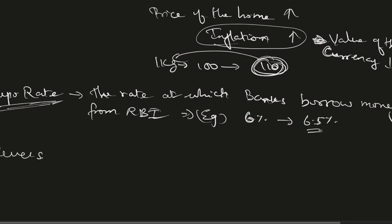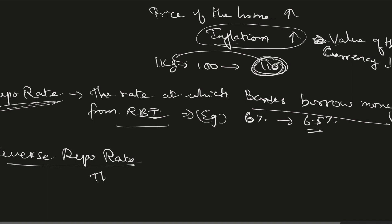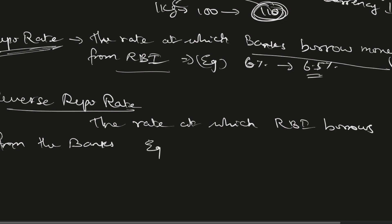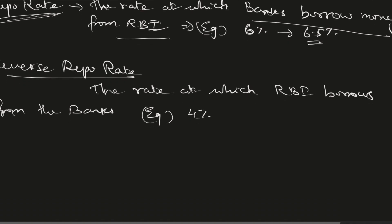Another instrument is the reverse repo rate. While repo rate is the rate at which banks borrow from RBI, reverse repo rate is the rate at which RBI borrows from the banks. For example, this might be around 4%. RBI does this when they want to suck out liquidity from the market.